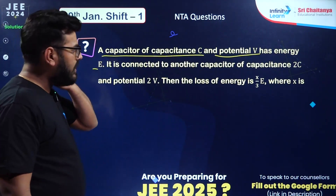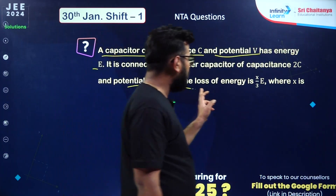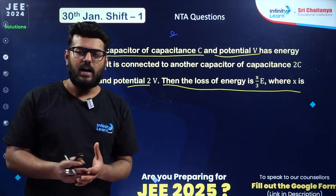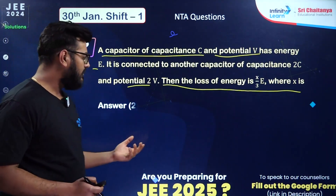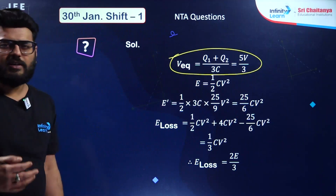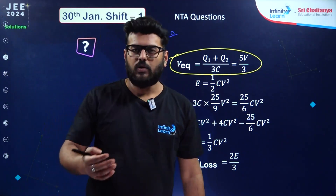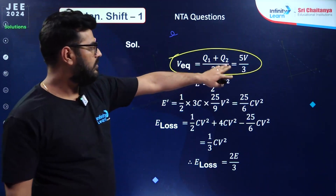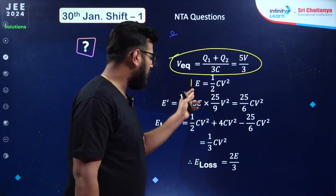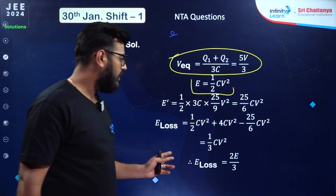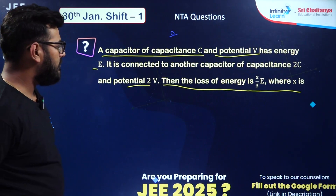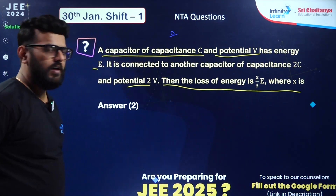A capacitor of capacitance C and potential V has energy E, connected to another capacitor of capacitance 2C and potential 2V. The loss in energy is asked. Find V_equivalent = (C1·V1 + C2·V2)/(C1+C2), then compute final energy. Energy loss comes out to be 2E/3. The value of x in the answer expression is 2.